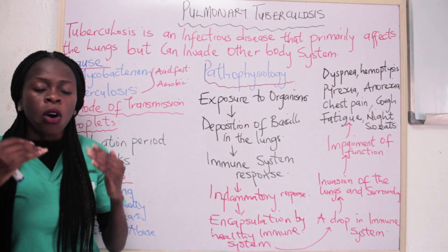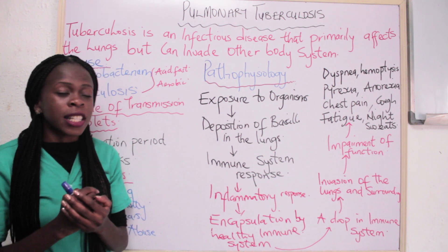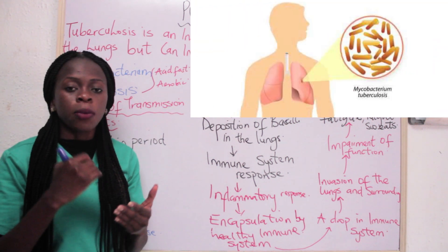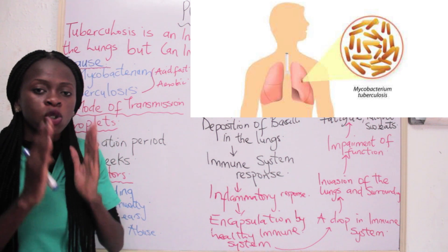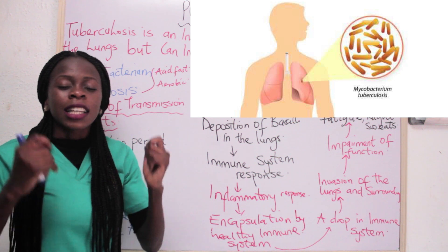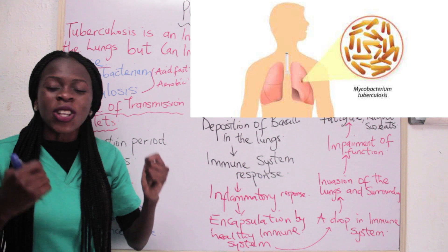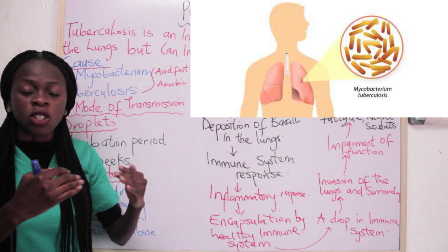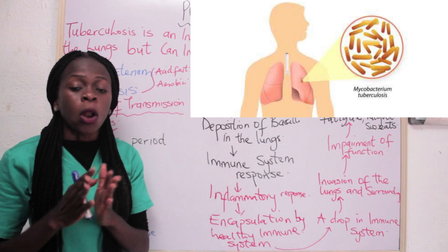The major cause of pulmonary tuberculosis is Mycobacterium tuberculosis. There's something special about this bacteria in the sense that it loves oxygen. That is why most times the bacilli of Mycobacterium tuberculosis usually reside at the apex — the upper part of the lungs — when they invade the lungs.